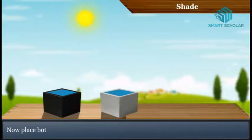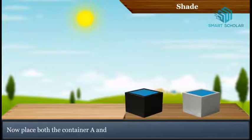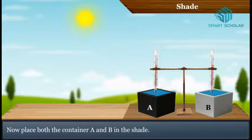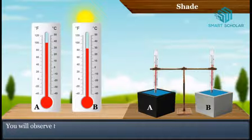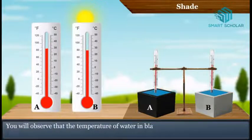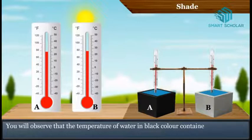Now place both containers A and B in the shade. You will observe that the temperature of water in the black container cools down faster.